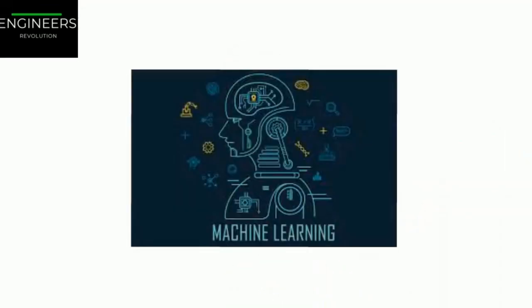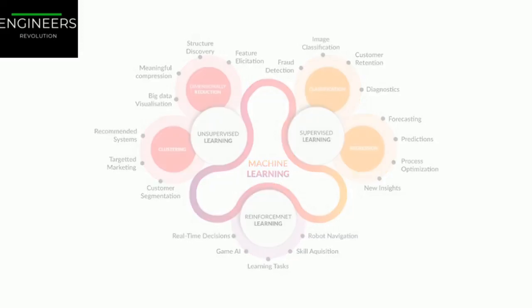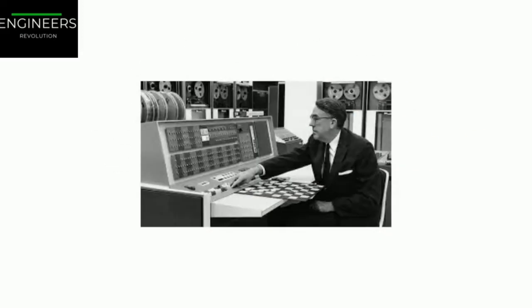Machine learning is the science of programming computers so they can learn from data. According to Arthur Samuel, machine learning is the field of study that gives computers the ability to learn without being explicitly programmed.